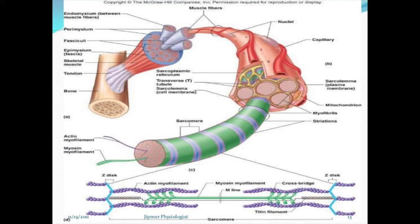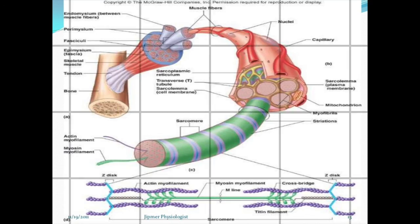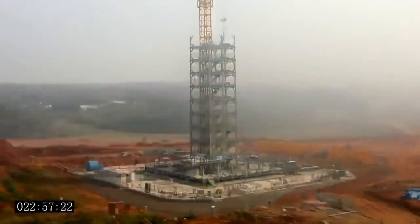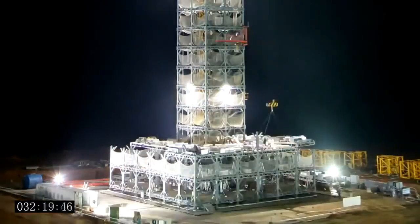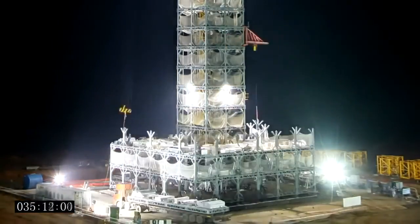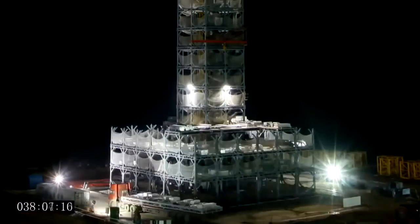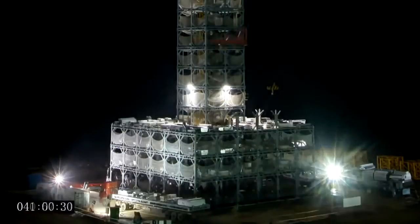A skeletal muscle consists of thousands of muscle fibers grouped together into bundles called fascicles, which are all wrapped up in an outer membrane called the epimysium. The construction of a skeletal muscle is a lot like the construction of a building — the building has many different compartments and protective layers, just like the muscle does.